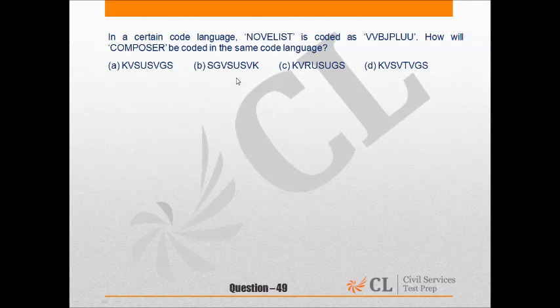Let us look at the next question. In a certain code language, NOVELIST is coded as VVBJPLUU. How will COMPOSER be coded in the same code language?